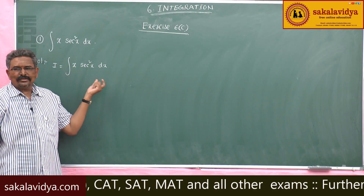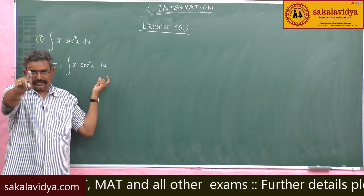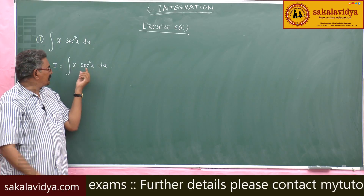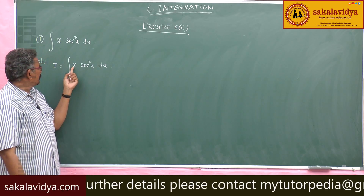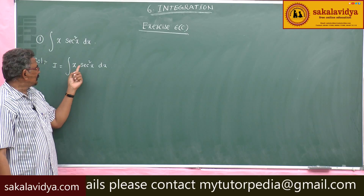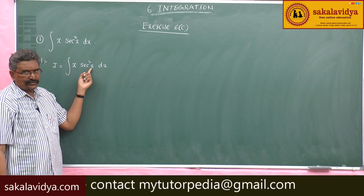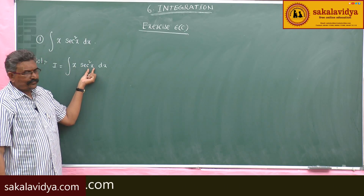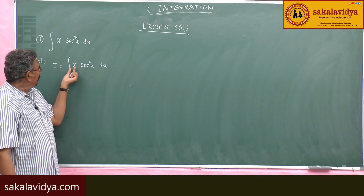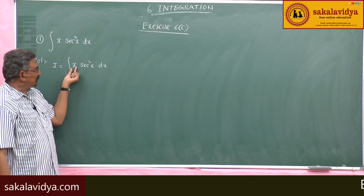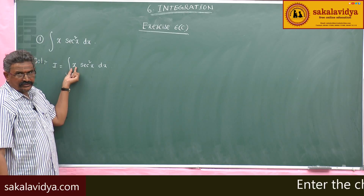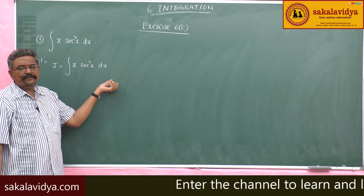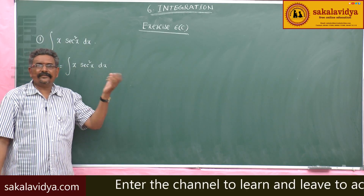Here this is a product of two functions. We identify the first function and second function: x is the algebraic function and sec²x is the trigonometric function. Take the algebraic function as the first function and the trigonometric function as the second function.